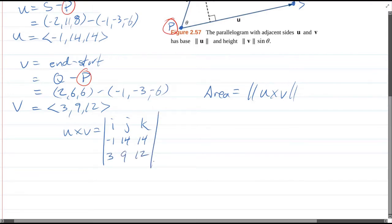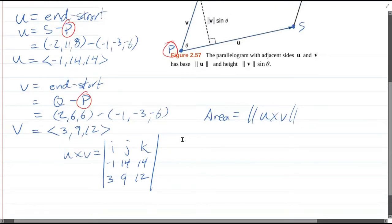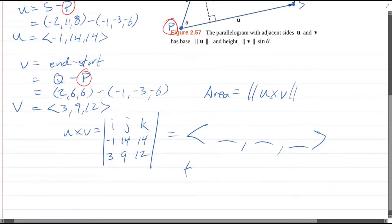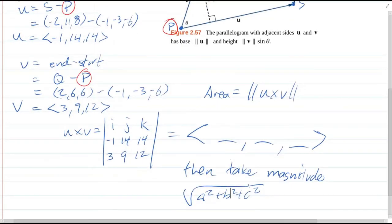I'm not going to go through the whole cross product computation because that would take a while, but you get the cross product. This will give you some vector. This vector is not the answer. The magnitude is the answer. So then take the magnitude. You do the square root of a² plus b² plus c². And so that would be your magnitude right there.